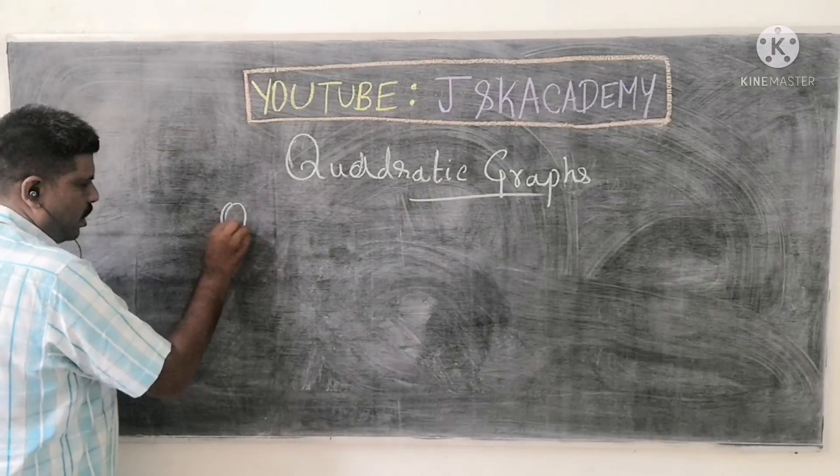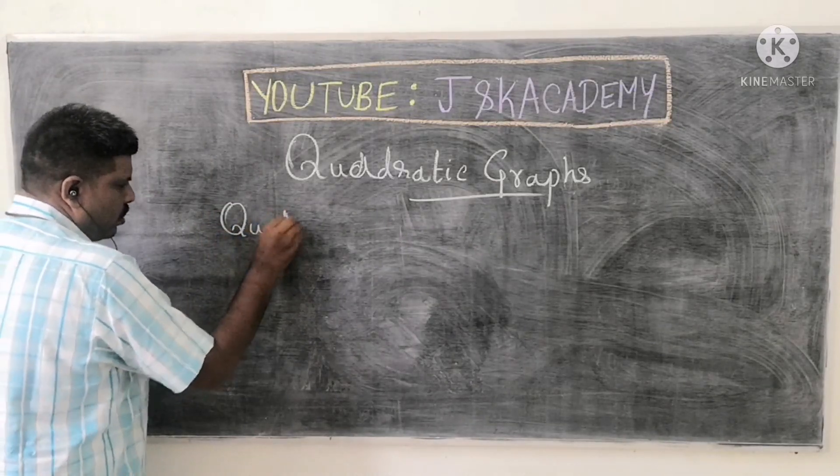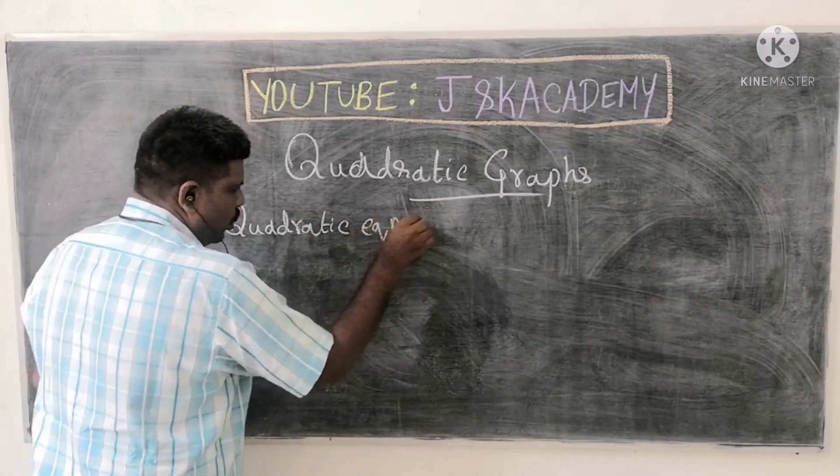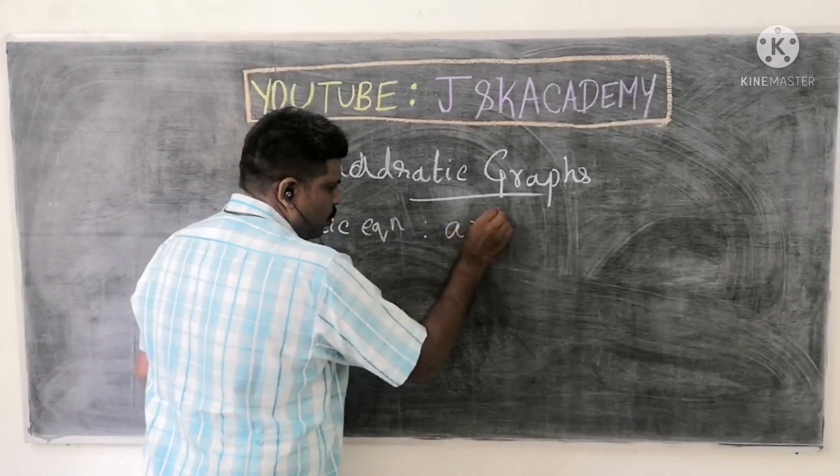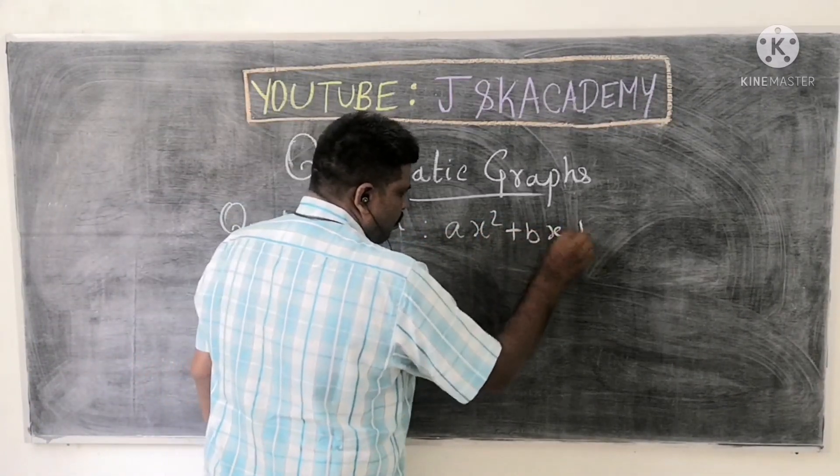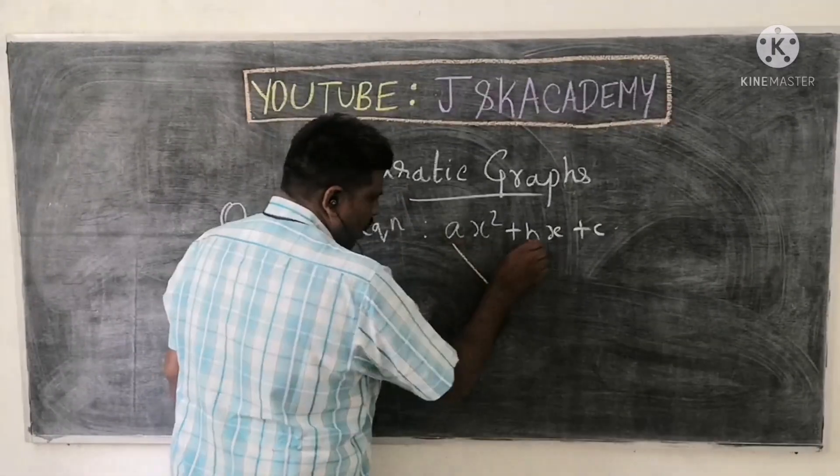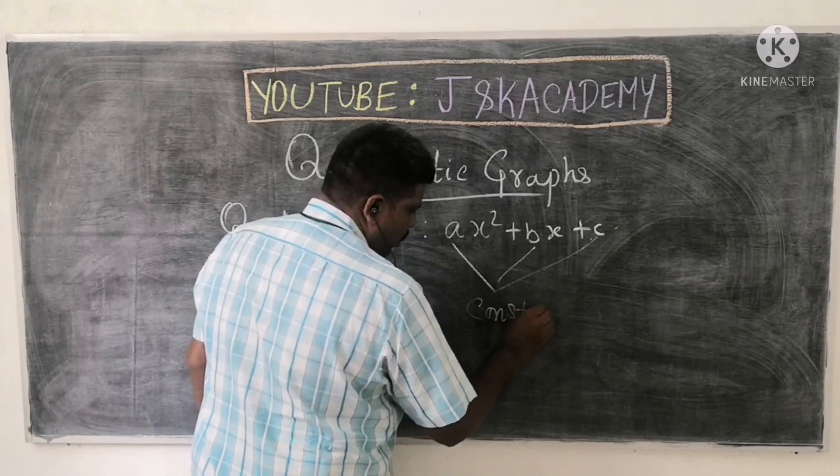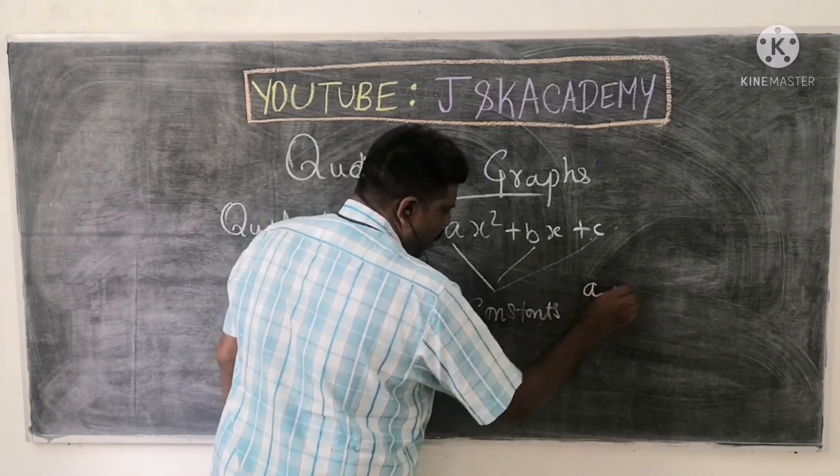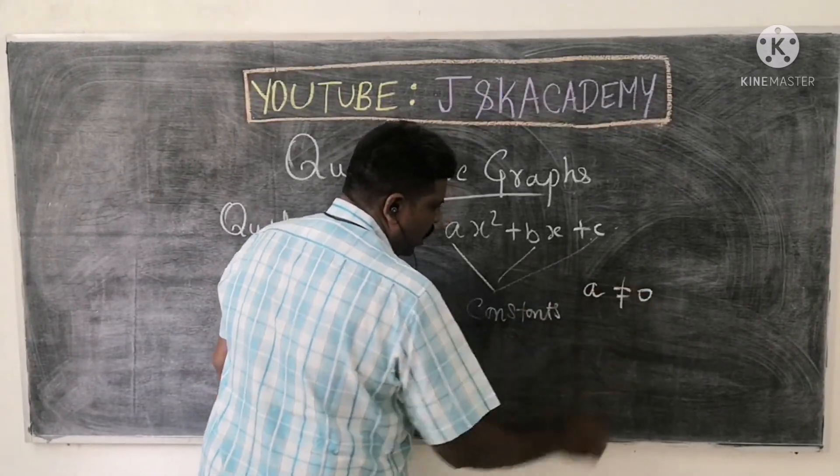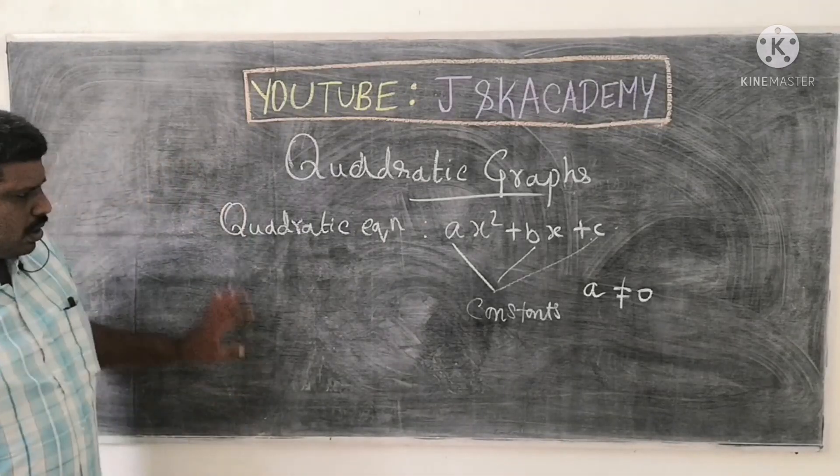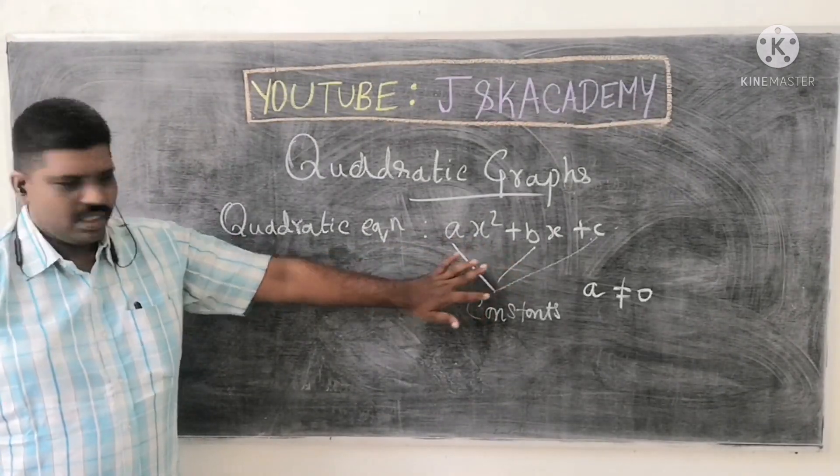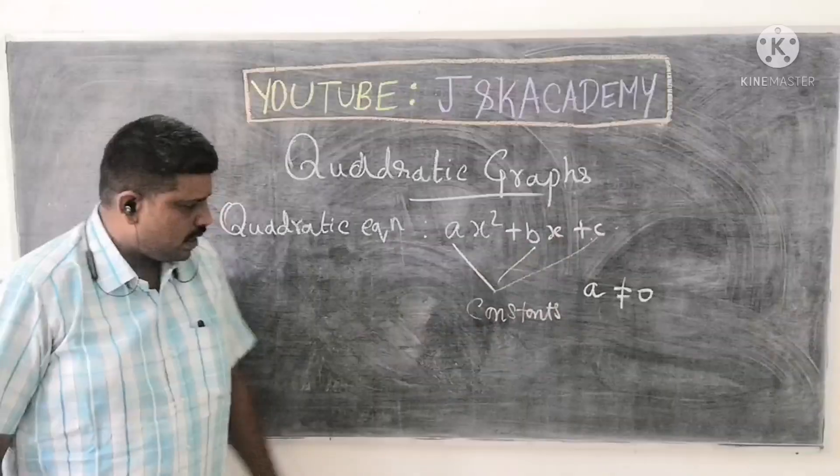So quadratic graphs, quadratic equation. That's the form of ax² + bx + c. This is a, b, c - it is a constant. A should not be equal to 0 and this is quadratic equation format: ax² + bx + c.